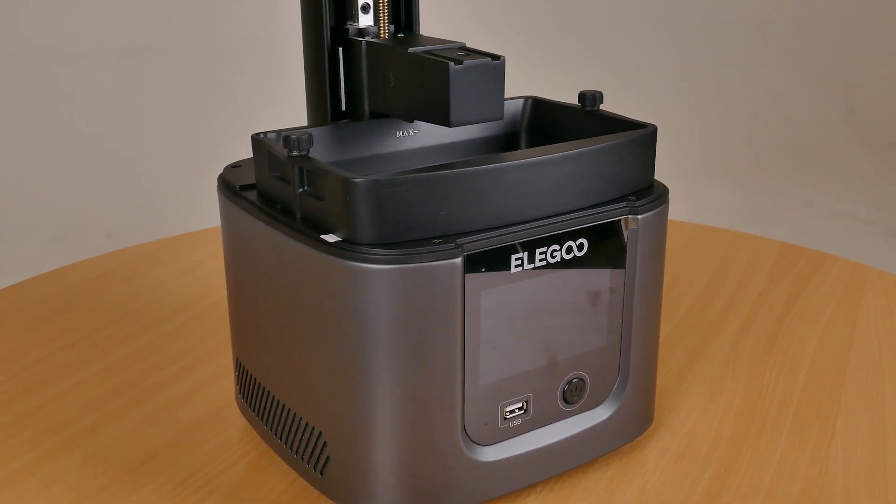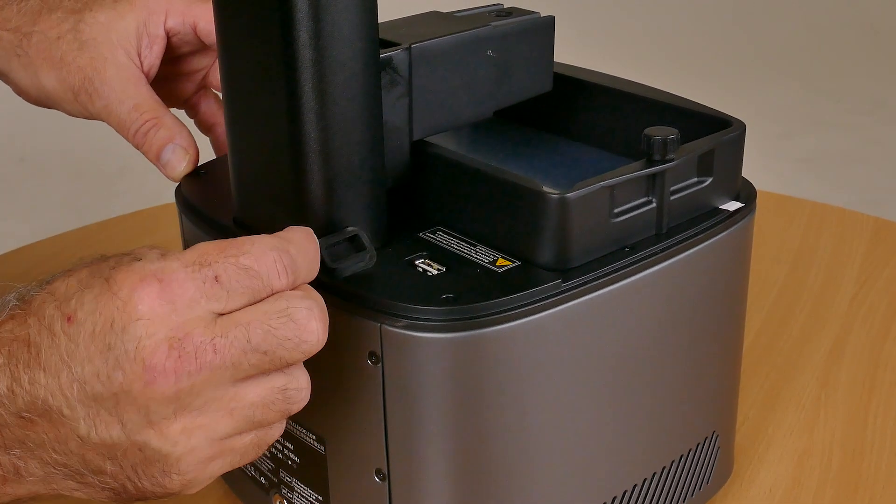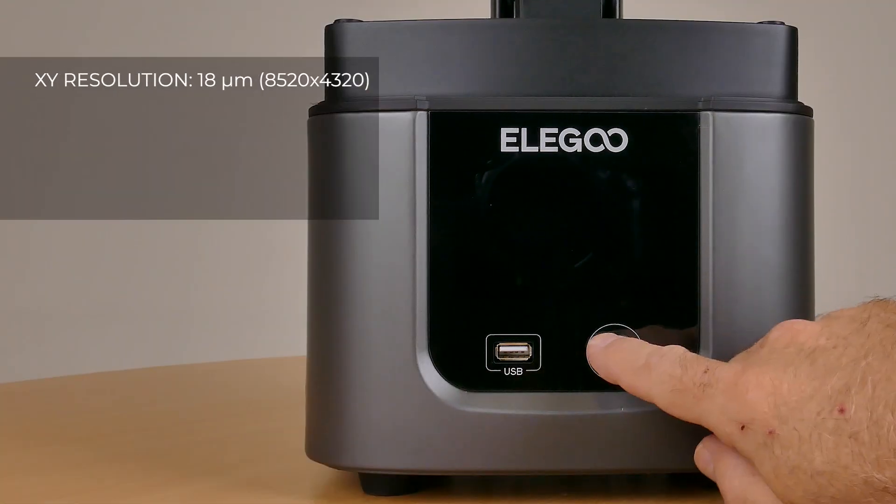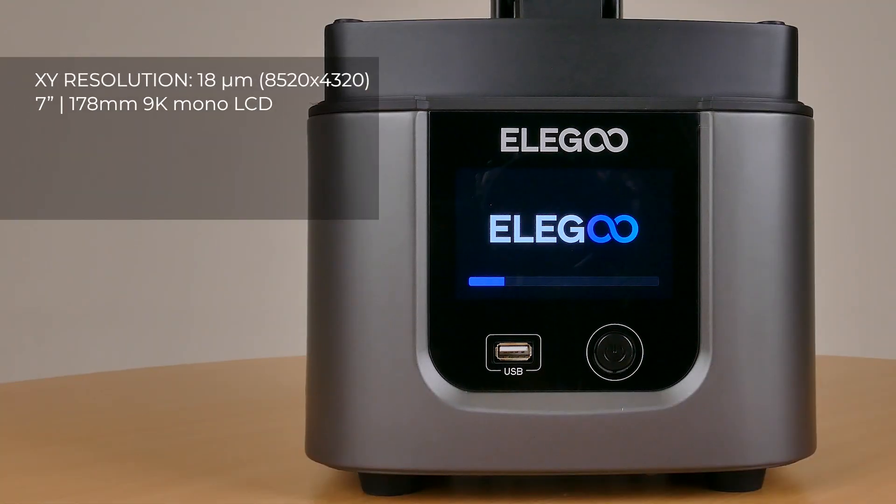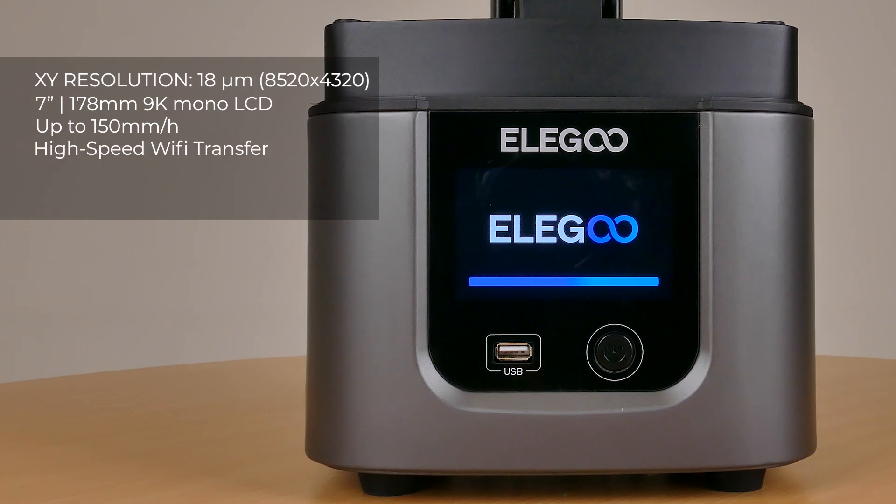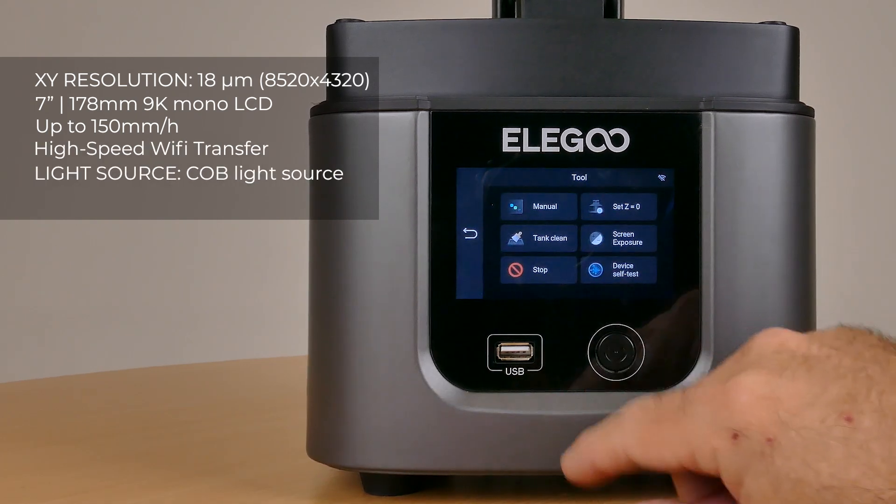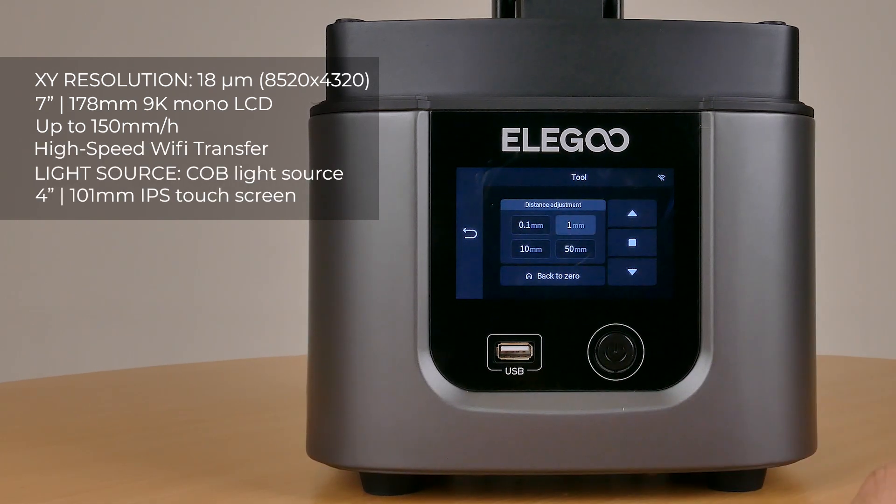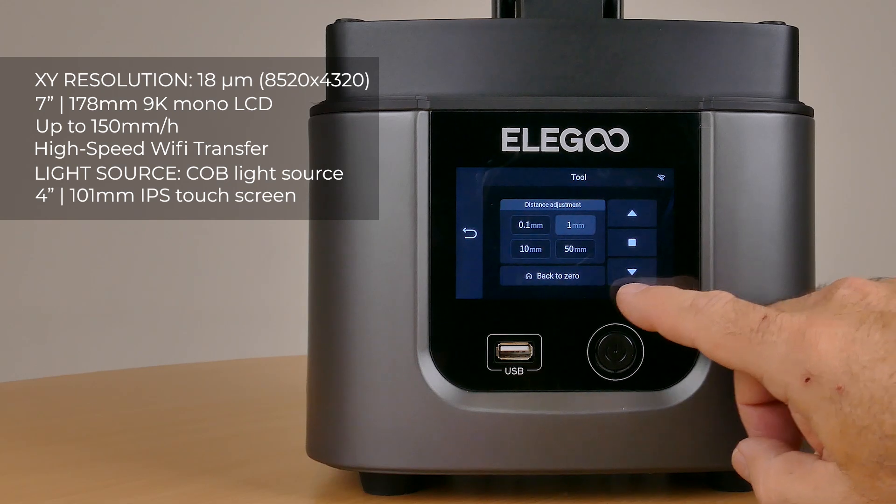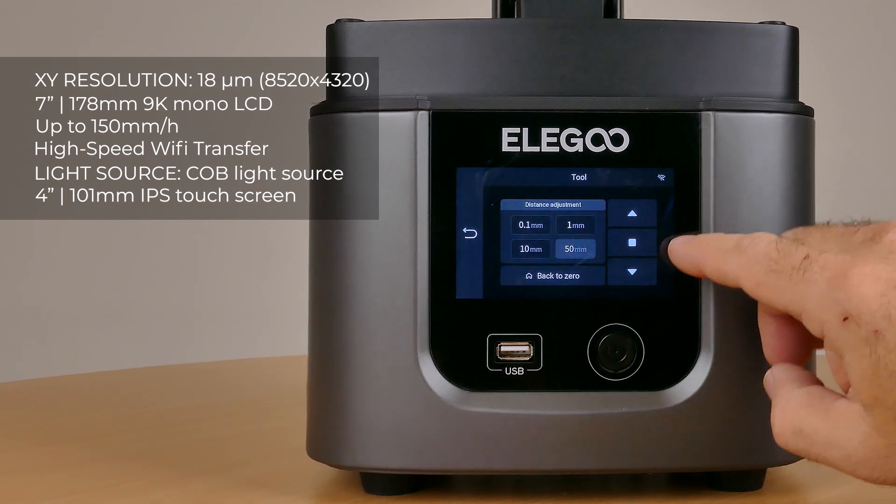It's a really nice machine. A USB port at the back and that's where the filter goes. This unit's got some really great specs - 9K mono screen, 7 inch high-speed Wi-Fi transfer so you don't have to run around with the USB stick, COB light source which is circuit on board, and a 4-inch IPS touchscreen.